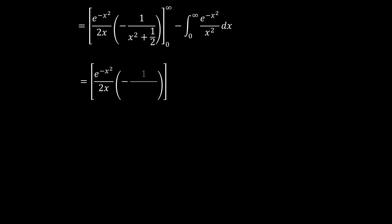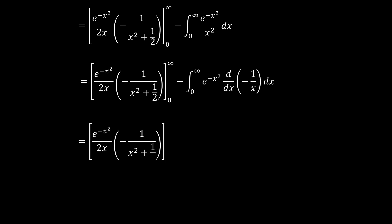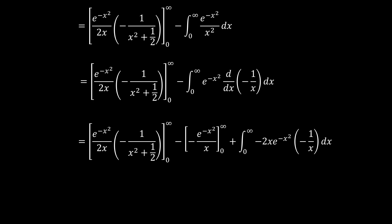Going forward, we can consider 1 over x squared as the derivative of negative 1 over x. Doing another integration by parts, our uv is e to the power negative x squared over x, evaluated from 0 to infinity. Since we have a negative here, the minus and negative interaction gives us a plus, and the derivative of e to the power negative x squared is negative 2x e to the power negative x squared. This and that cancel to a positive.